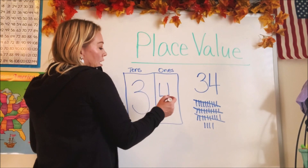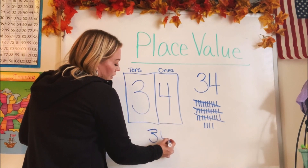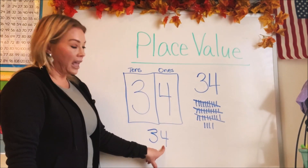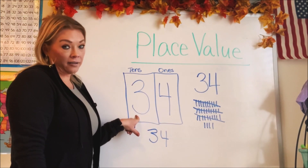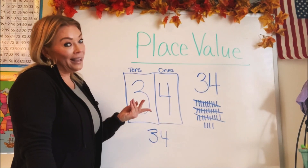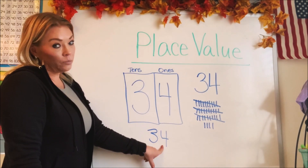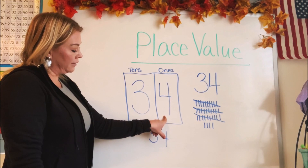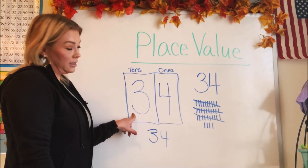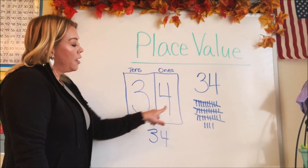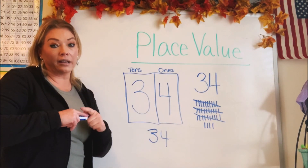Now did you notice that in the number 34, the last number is the ones and the next number is the tens? It's kind of a trick — you could just look at this and say, the last digit is going to be the ones and the next digit is going to be the tens.